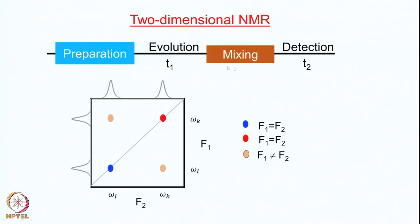T1 and T2 are time variables, which means you do a series of experiments varying the values of T1, and the data is collected as a function of time during the detection period T2. This generates a two-dimensional data matrix. In every case the preparation and the mixing remain the same; you systematically increment the value of T1 and collect an FID.